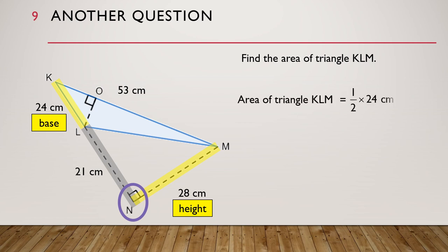So the area of triangle KLM is equal to half times base times height, and we get 336 square centimeters. Now go and try some questions on your own. Goodbye.